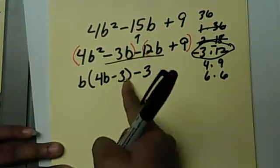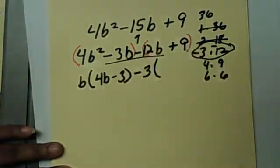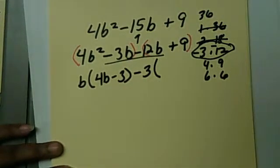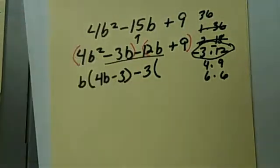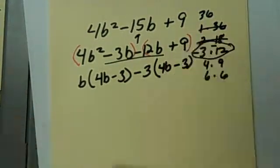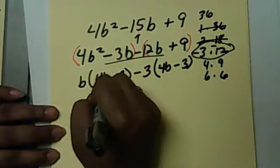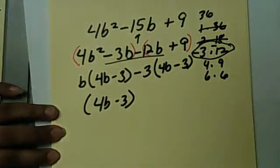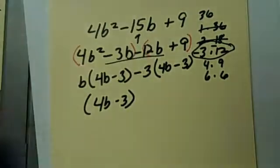Now when you have a minus in the middle, you're going to have to remember that that changes the sign of everything. So that's going to be 4B minus 3. Since we have both our 4B minus 3, I'm going to write that down and then our left over is B minus 3.